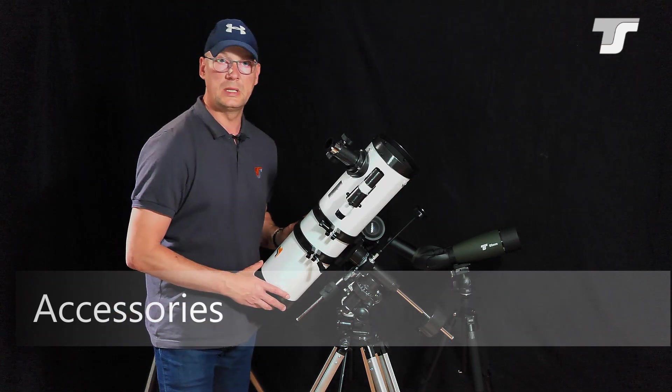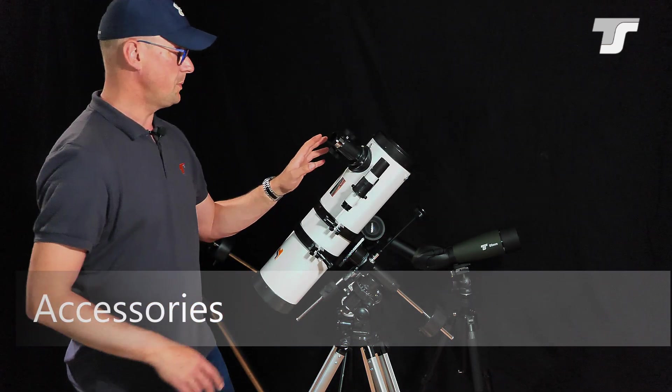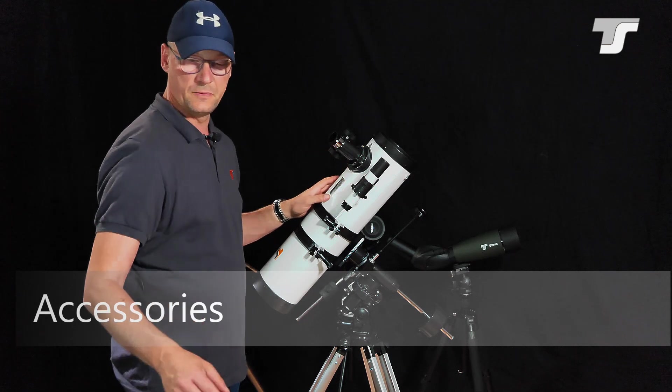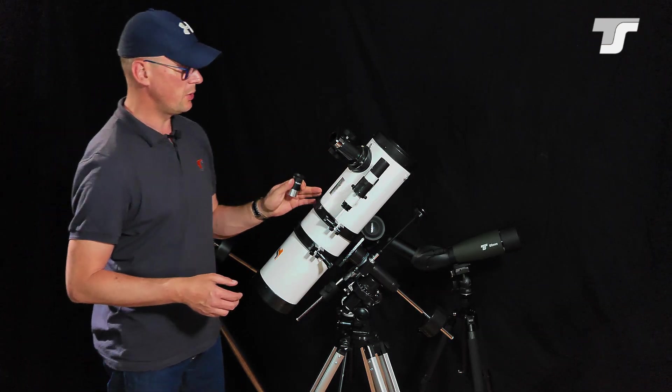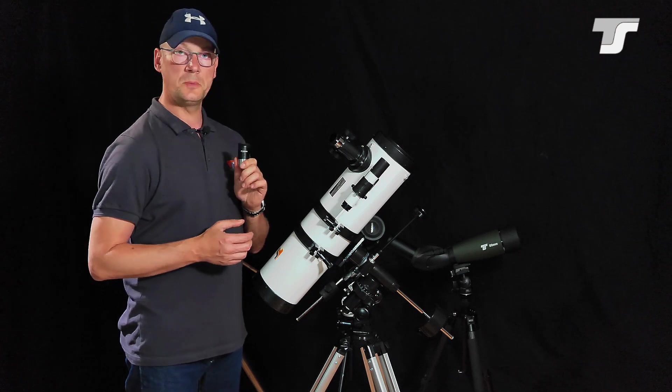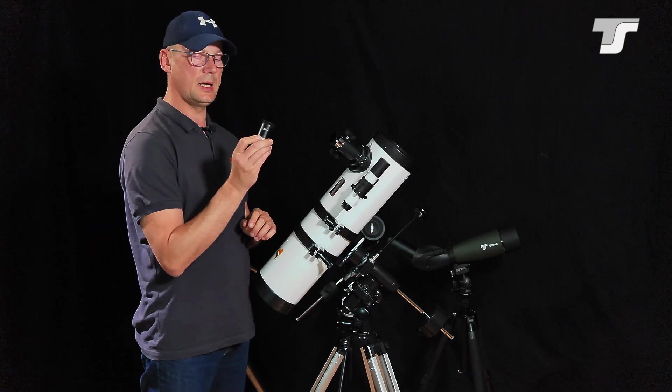Now let's talk a bit about the accessories. Of course you need eyepieces for a telescope, and with the 130 millimeter telescope I'm showing you here, you get two eyepieces. Two Plössl design eyepieces.